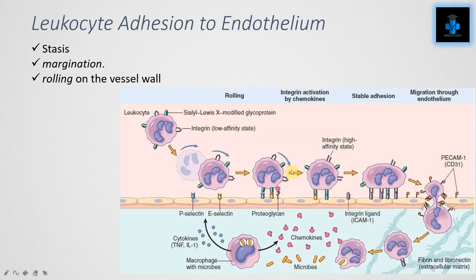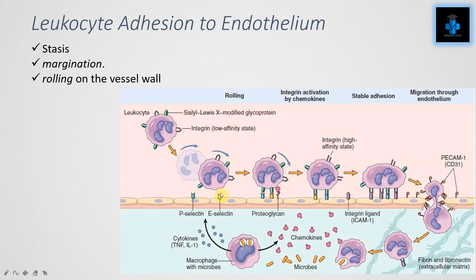On the surface of the leukocyte we can appreciate the sialyl Lewis X-modified and integrin molecules, which are glycoproteins. The integrin is in a low-affinity state at the free stage. When injured, mediators and cytokines are released. The cytokines stimulate the endothelium to express P-selectin and E-selectin on the endothelial surface. The sialyl Lewis X-modified glycoprotein and integrin on the leukocyte bind with P-selectin and E-selectin, but this interaction is very weak in nature.